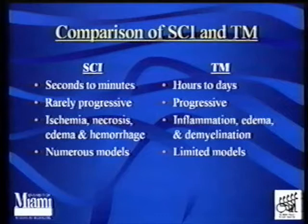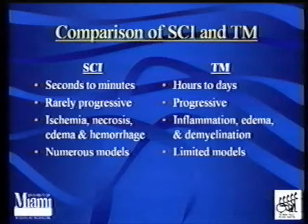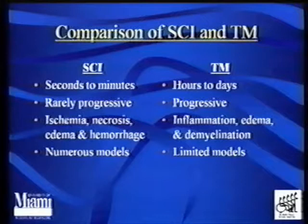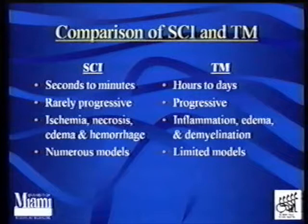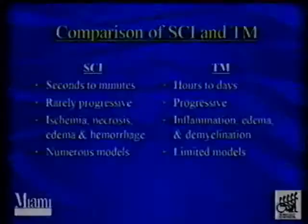Spinal cord injury occurs in seconds to minutes — especially when we're talking about trauma from an acute accident — as opposed to something that may be slowly compressive, like an epidural hematoma or a mass pressing on the cord. Whereas the flavor in transverse myelitis is slower, hours or days. Spinal cord injury is rarely progressive; it's an extreme monophasic event. You have the injury, the deficits occur. However, it's rare to have a secondary progression, although sometimes it happens. We do see progression in transverse myelitis.